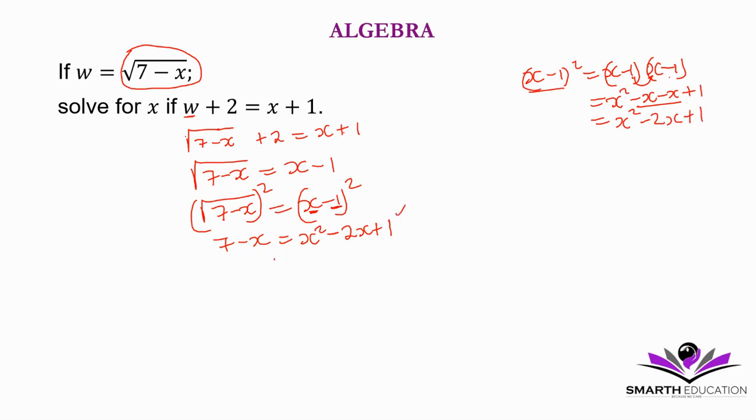Now let's get the standard form. 0 equals x squared, then negative 2x plus x because we transpose. Negative 2x plus x is negative x. We transpose 7: 1 minus 7 is minus 6.